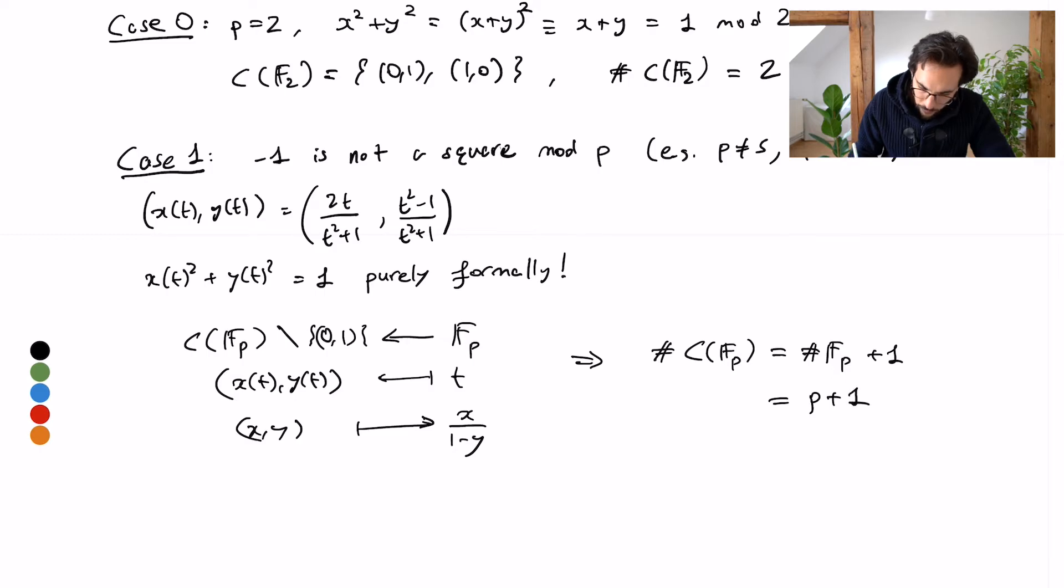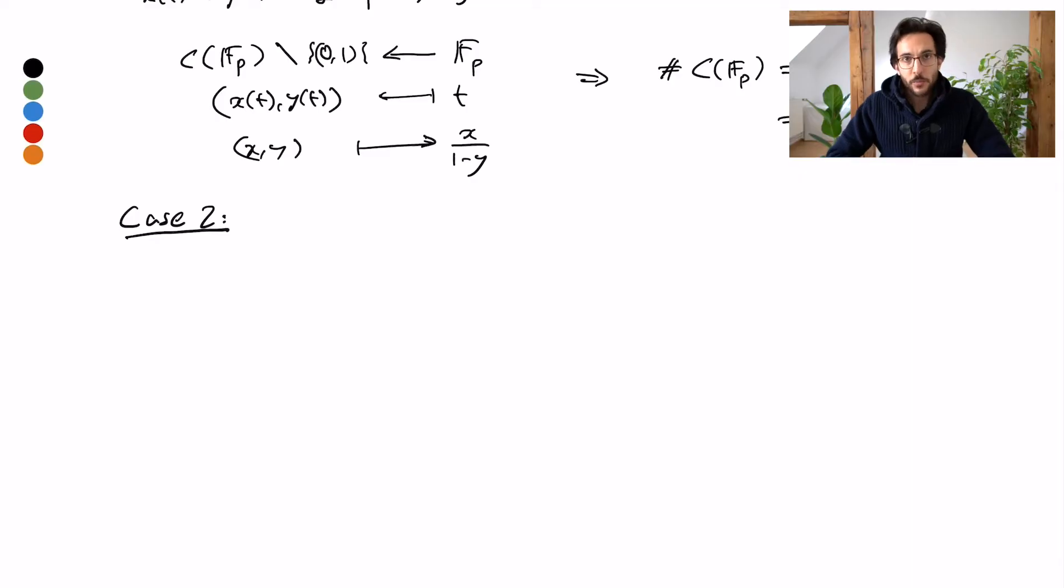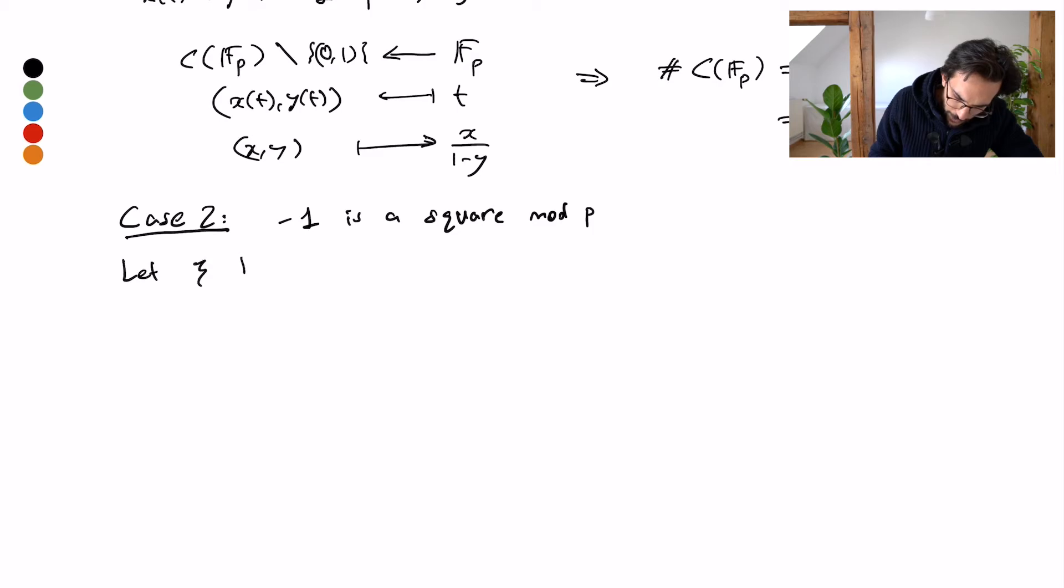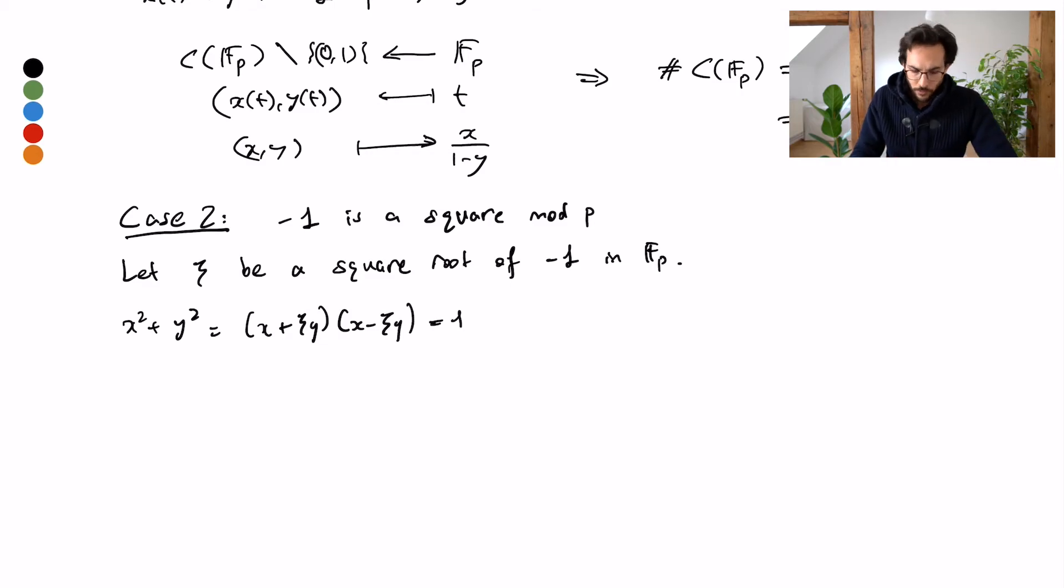Let's move on to the second case, or rather case number two. Now minus one is a square residue. Let ψ be a square root of minus one in F_p. Then what I can do is to write x squared plus y squared as (x + ψy)(x - ψy). So I factorize this equation and I want this to be equal to one. Let's continue here by saying this is u and saying that is v, so as functions of x and y.